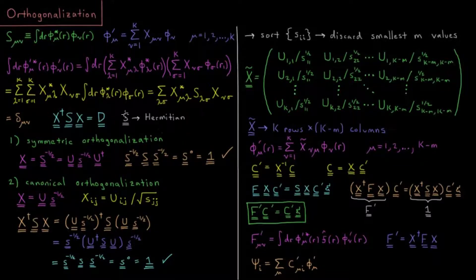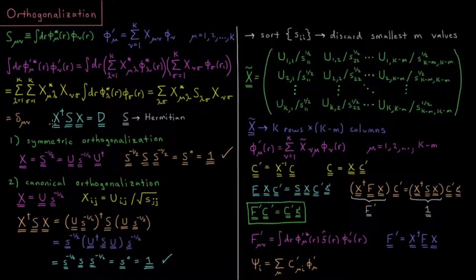We also know that S has to be a Hermitian matrix. So we're, in a sense, using a unitary transformation to diagonalize this Hermitian matrix. It's a question of what transformation matrix we should use in order to diagonalize or orthogonalize this particular matrix of interest.